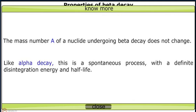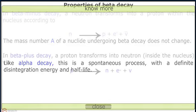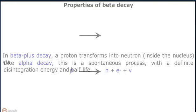Neutrinos can even penetrate the earth without being absorbed. It is for this reason that their detection is extremely difficult and their presence went unnoticed for long. The mass number A of a nuclide undergoing beta decay does not change. Like alpha decay, this is a spontaneous process with a definite disintegration energy and half-life.